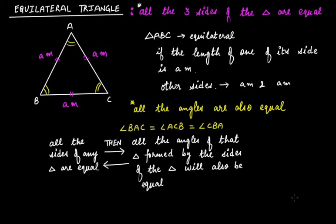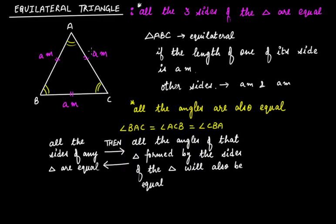We have discussed equilateral triangle and the next type of triangle we will discuss is isosceles triangle. If you remember, in an equilateral triangle all three sides are equal and the angles formed by the sides of that triangle are also equal. So if any one of those conditions is given, you can tell that it's an equilateral triangle. In the isosceles triangle, only two sides are equal.